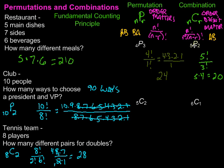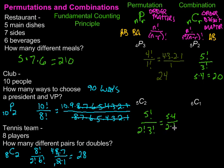Now for combinations — 5C2, the same numbers but order doesn't matter. On top we have 5 factorial, over 2 factorial times 3 factorial. The 3 factorial cancels, leaving 5 times 4 on top and 2 times 1 on the bottom. Simplifying: 5 times 2 over 1 gives us 10. Notice there are half as many — that's because when order doesn't matter, there are usually fewer combinations than permutations.